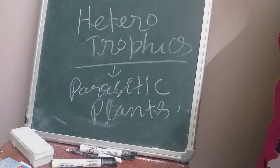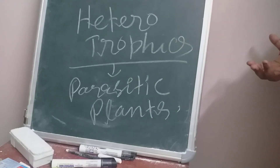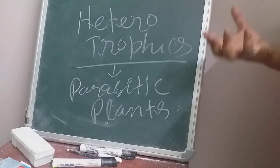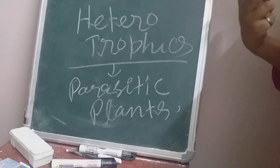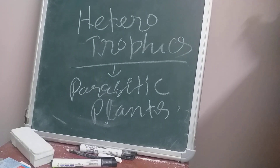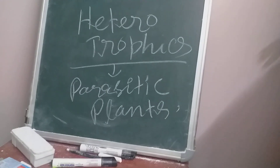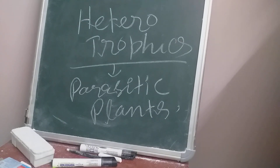All parasitic plants have modified roots. These modified roots help them attach to and absorb food from the host plant. There are also insectivorous plants, which trap and kill insects. Mushroom is similar in structure — it looks like an umbrella.